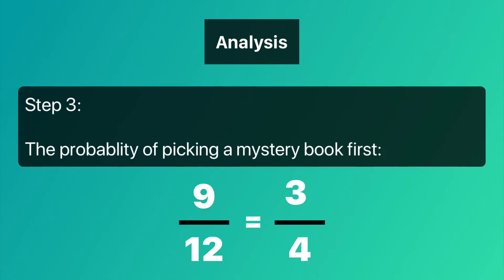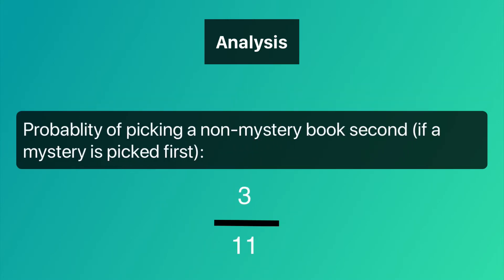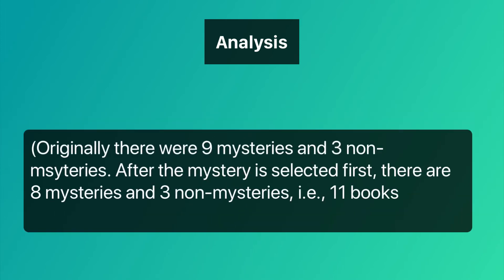Step three: the probability of picking a mystery book first is 9 over 12, which equals 3 over 4. The probability of picking a non-mystery book second, if a mystery book is picked first, is 3 over 11.